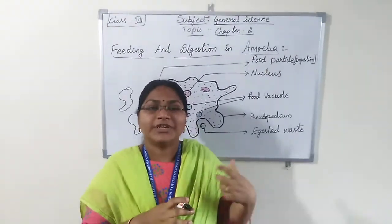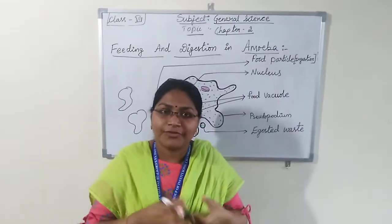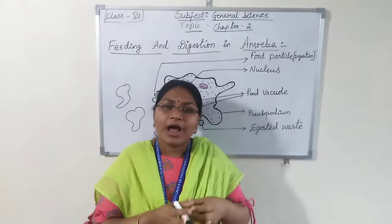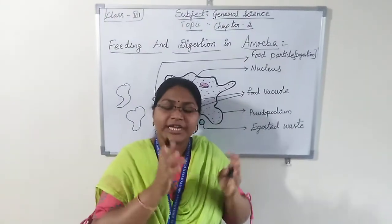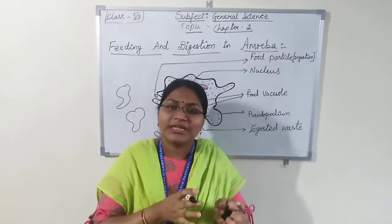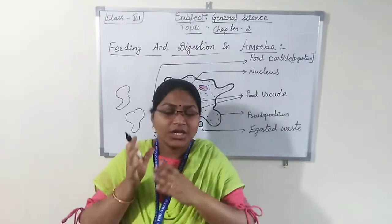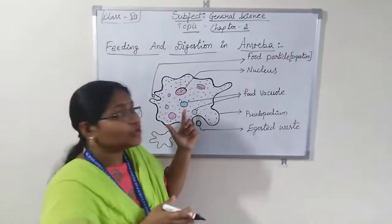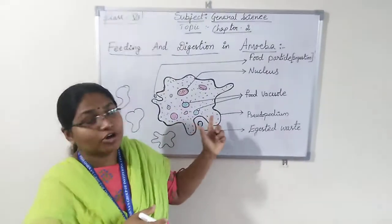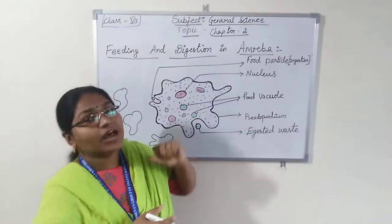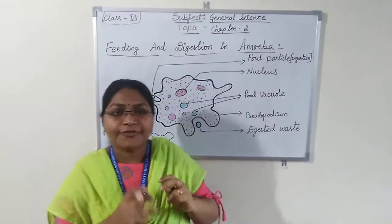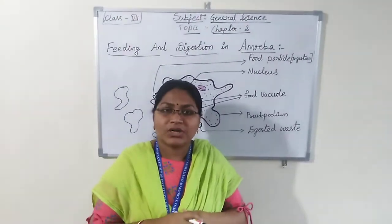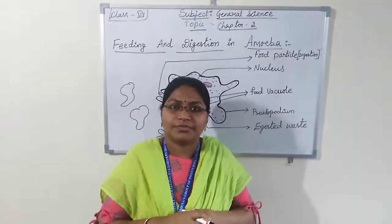In this second chapter — Nutrition in Animals — you learned different ways of food taking, components of food, digestion in humans, digestion in grass-eating animals, and also digestion in microorganisms like amoeba. If you have any doubts, please ask through WhatsApp. Thank you.